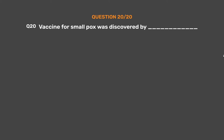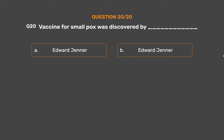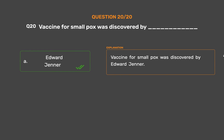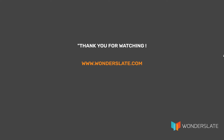Question number 20. The vaccine for smallpox was discovered by whom? Option A: Edward Jenner. Option B: Edward Jenner. Option C: Thomas Jenner. Option D: None of these. The correct answer is Option A, Edward Jenner. The vaccine for smallpox was discovered by Edward Jenner.